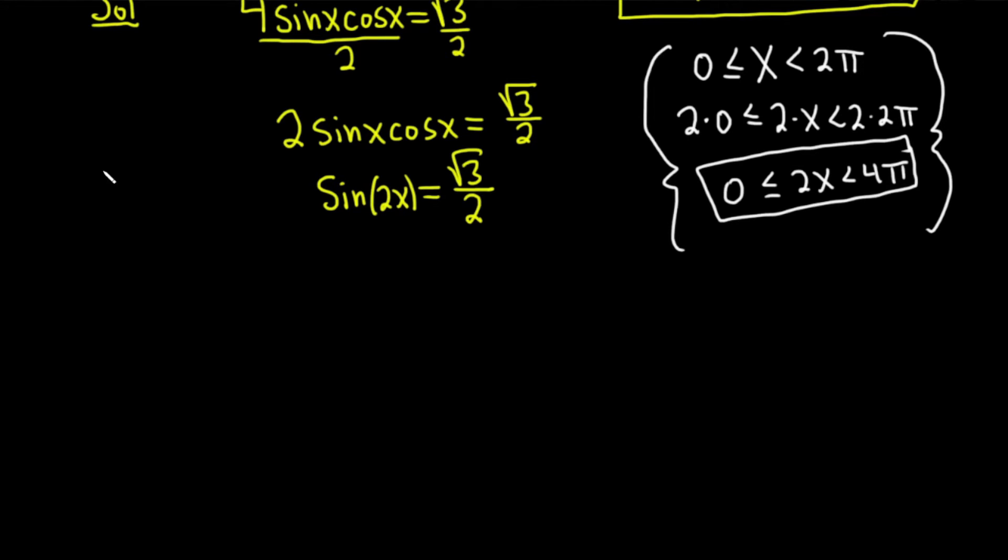So from memory, I know that the sine of π over 3, pure memorization, is equal to the square root of 3 over 2. It's absolutely necessary that you know stuff like this. Just memorize it. So from memory, we know that. So we know that that's one of the answers. So 2x is going to be equal to π over 3. That's one of our answers. Because it's not x, right? It's 2x. So here's π over 3.